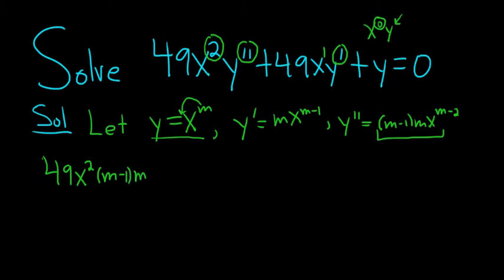Plus 49x, and then we have y prime. So that will be mx to the m minus 1, plus, then we have y. So that will be x to the m.